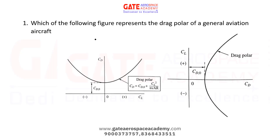Now let's start the solutions of the flight mechanics questions asked in Gator Space 2024. The first question is: which of the following figures represents the drag polar of a general aviation aircraft? This is the easiest one-mark question. We know that the relation between CL and CD is known as the drag polar. At zero lift, the drag polar is a parabola.